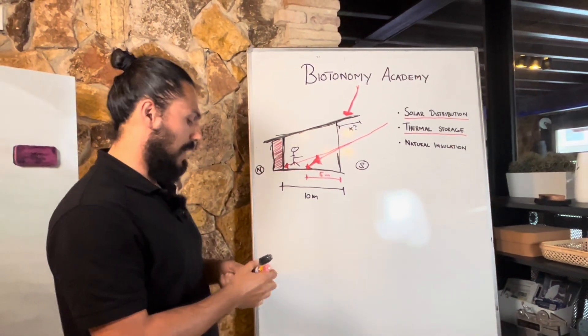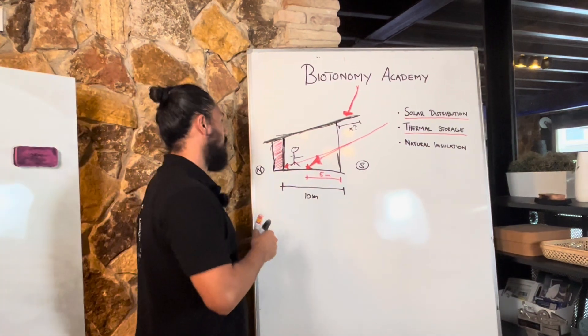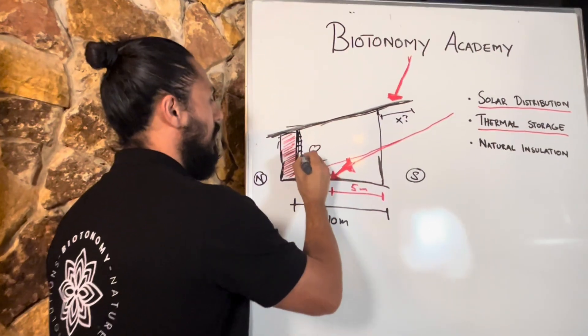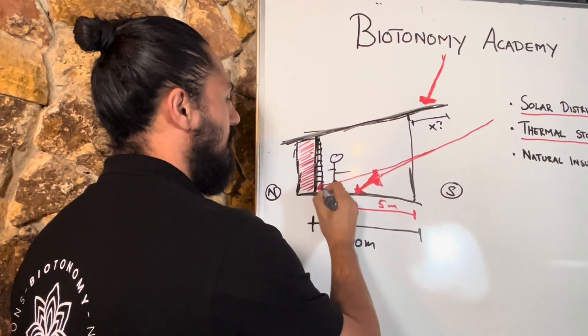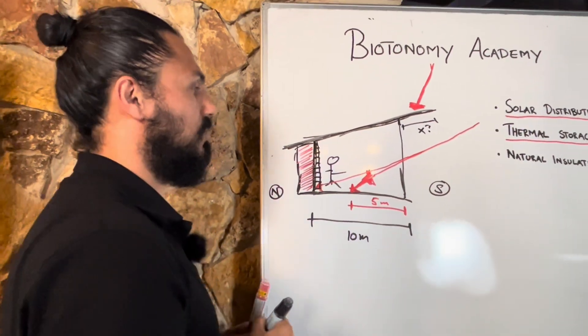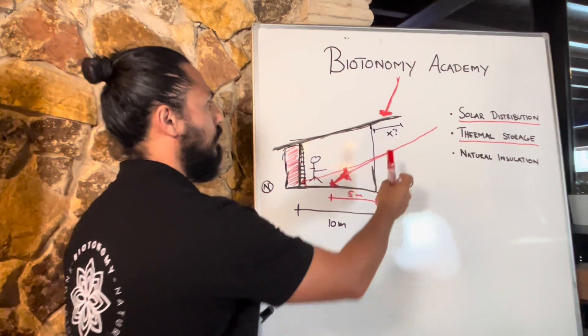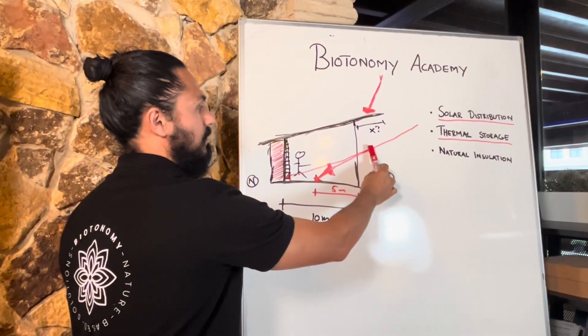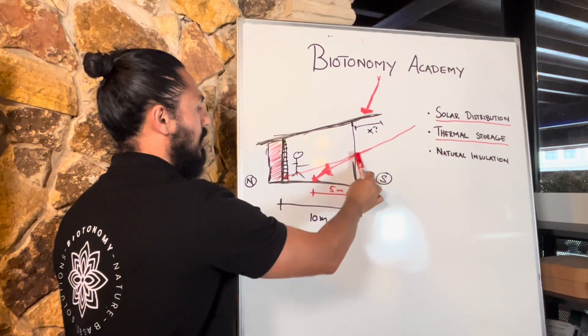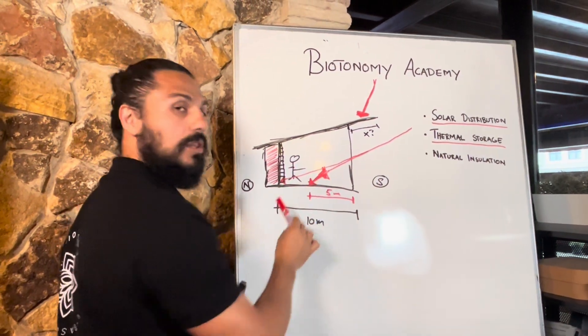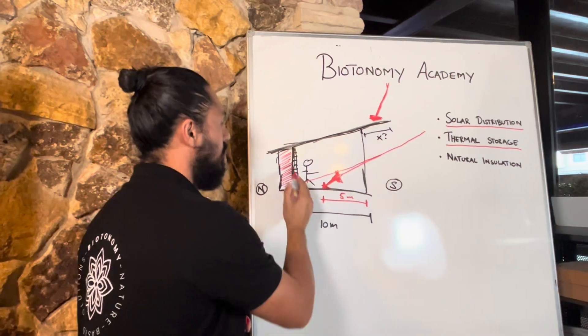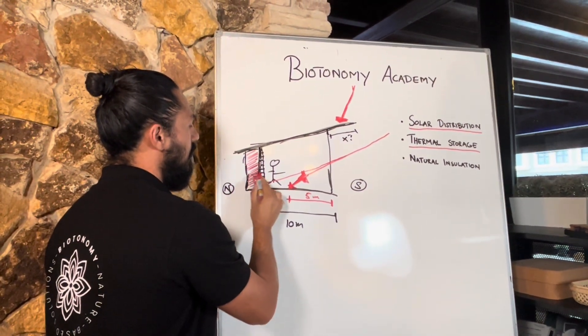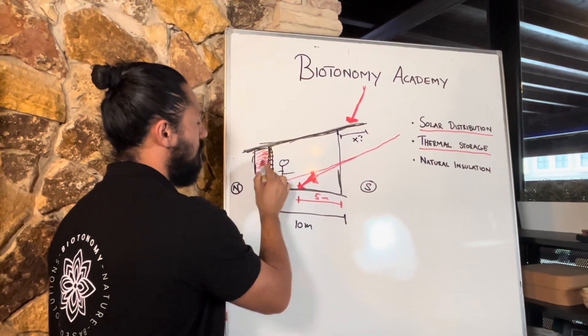So if you have a stone wall, for example if this wall here is a stone wall, and you've designed your solar distribution in the right way that in winter the sun is able to reach all the way back to your wall, this wall is going to absorb the heat and bring it back to your thermal storage.